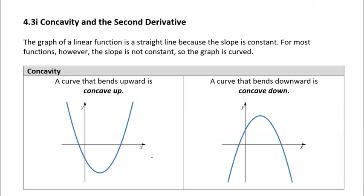The first derivative tells us about the slope of the function. If the first derivative is positive, the slope is positive and the function is increasing at that point. If the first derivative is negative, the slope is negative and the function is decreasing at that point.